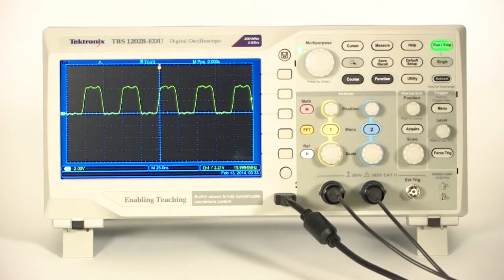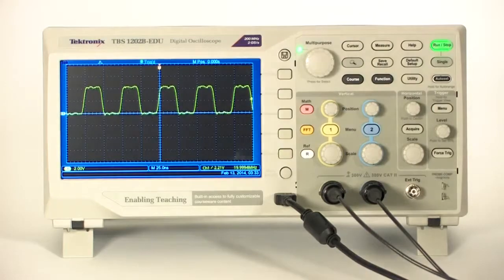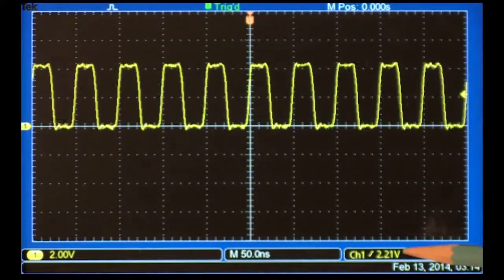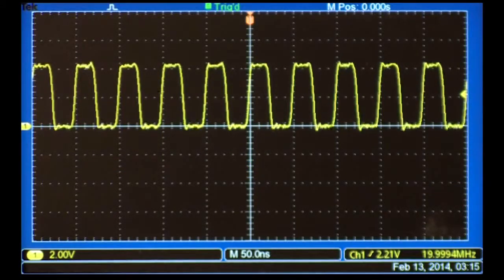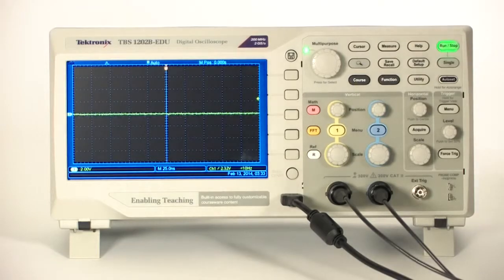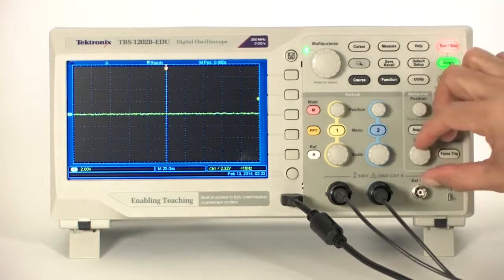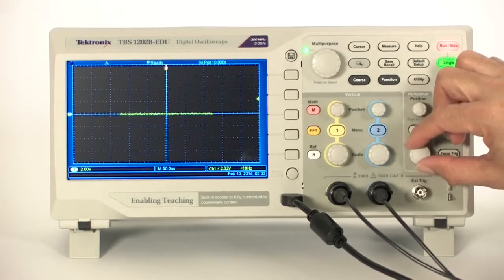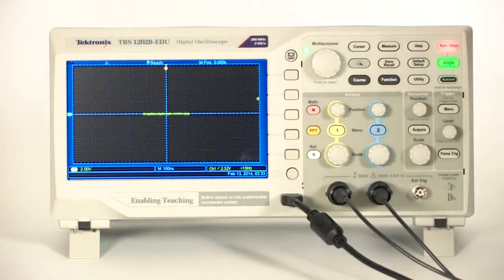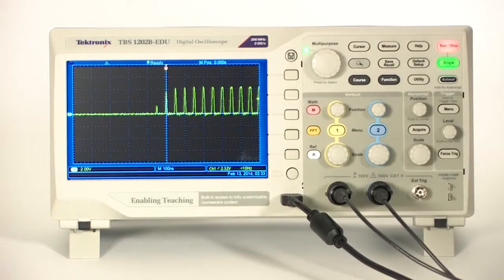To watch the clock start up, the triggering is set to trigger the first time it sees a rising edge that passes through about 2.2 volts. Now, let's use single shot to see the clock starting up. First, I'll set the scope to capture a single shot event. Then, I'll start the clock. The scope captures the first cycle of the clock that goes above 2.2 volts.